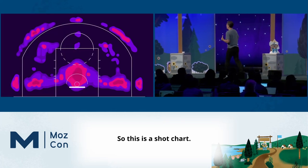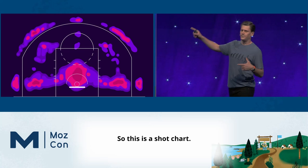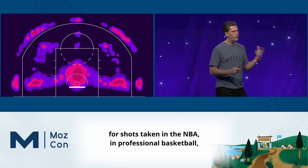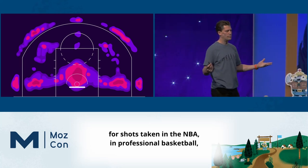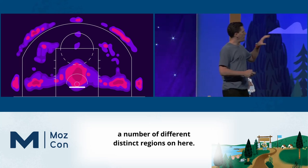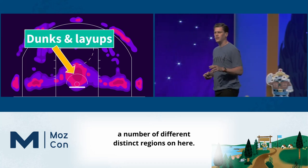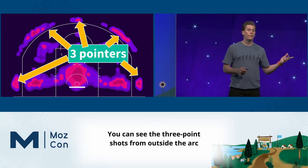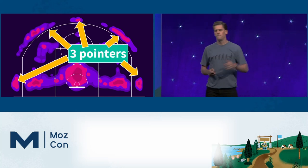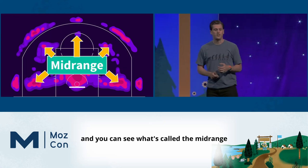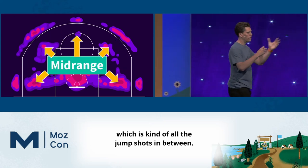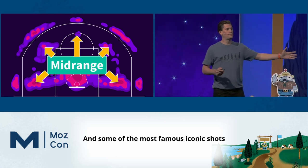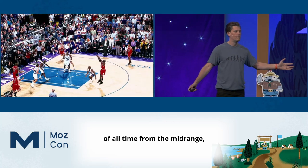This is a shot chart — the 200 most frequent locations for shots taken in the NBA, in professional basketball. You can see a number of distinct regions: the dunks and layups around the rim, the three-point shots from outside the arc, and what's called the midrange, which is all the jump shots in between. Some of the most famous, iconic shots of all time are from the midrange.